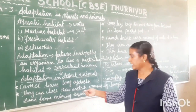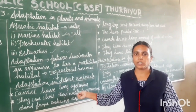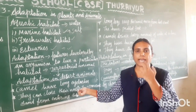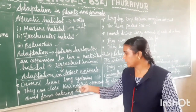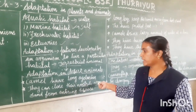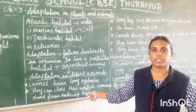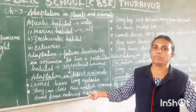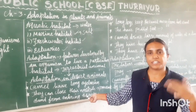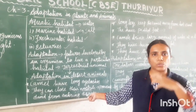What are nostrils? Nostrils are the holes in the nose through which air enters. Camels can close their nostrils to prevent sand from entering the nose while heavy wind blows.